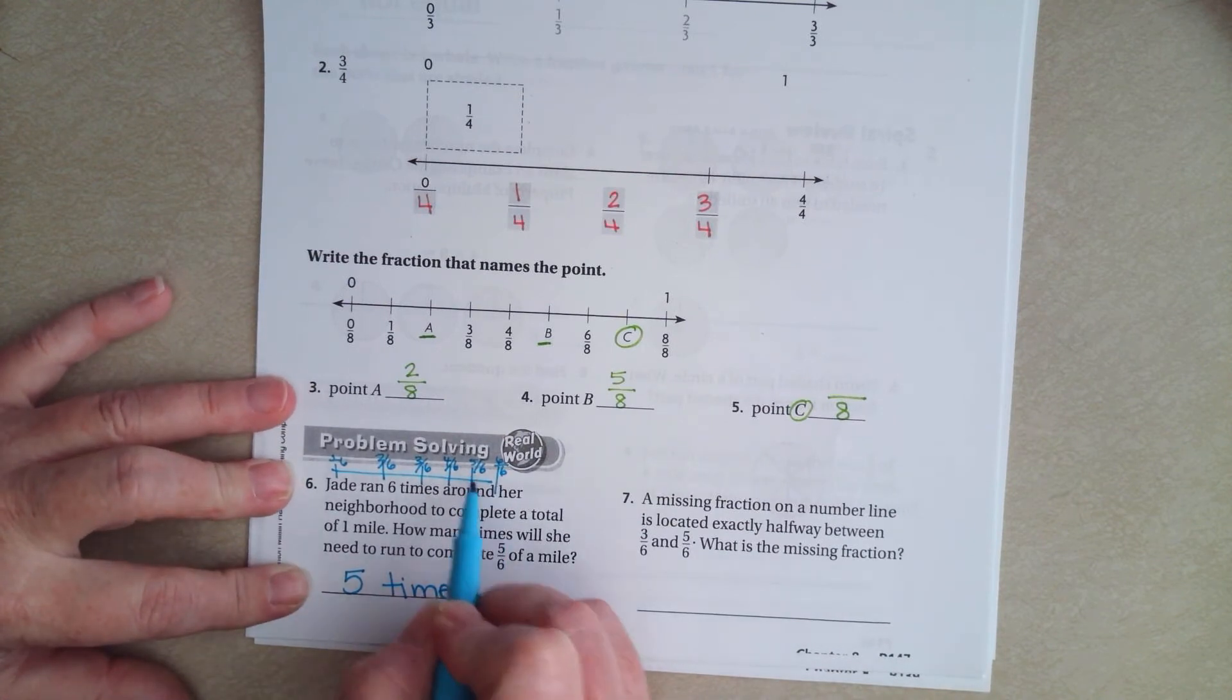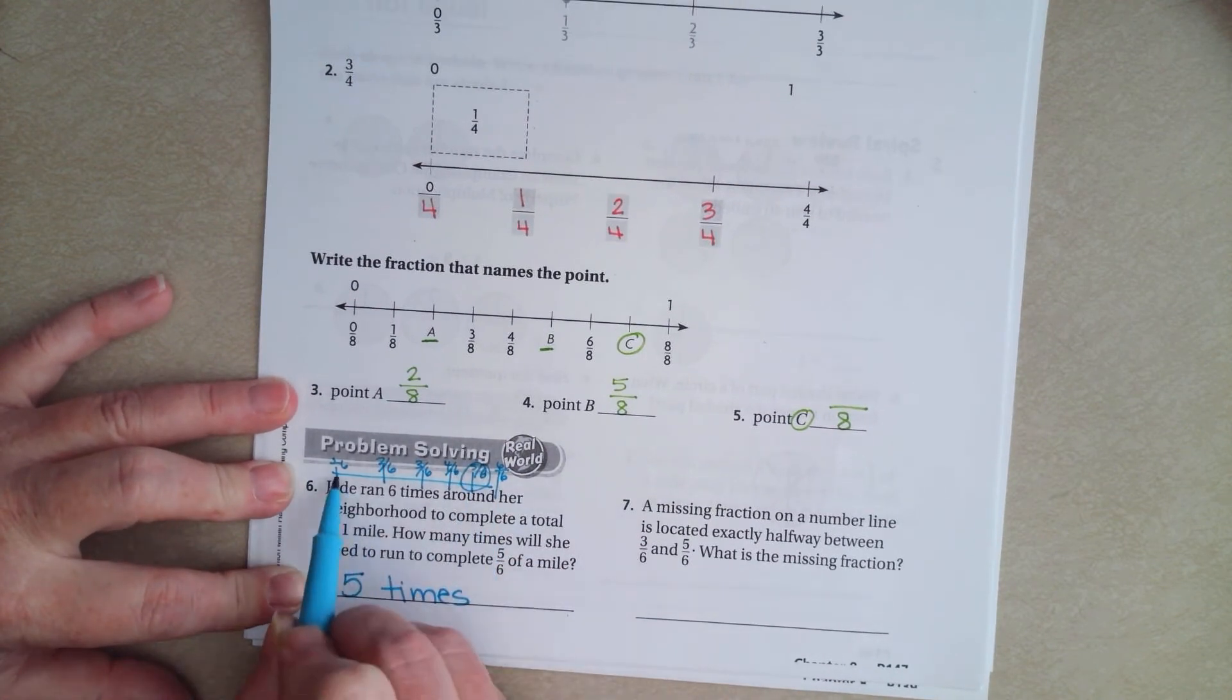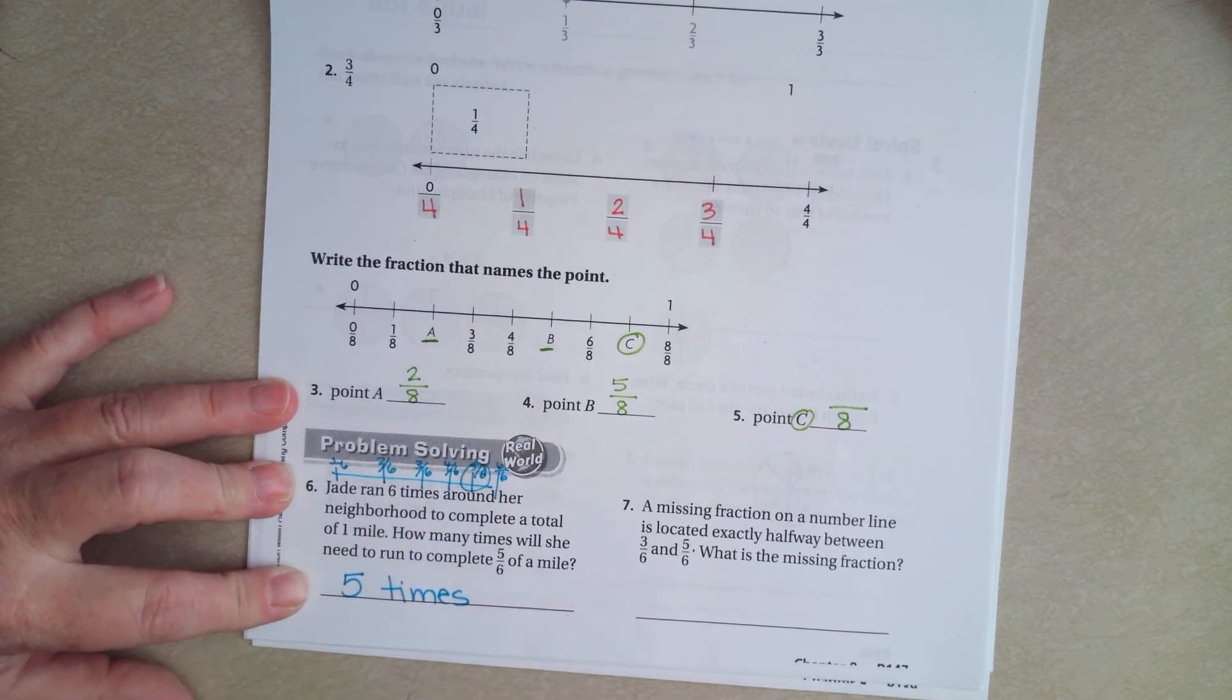And they want to know how many times to run 5 sixths of a mile. Well, that's 1, 2, 3, 4, 5. Done.